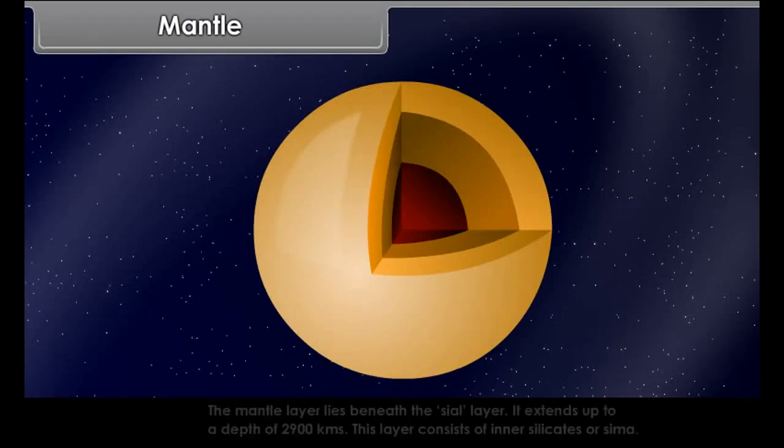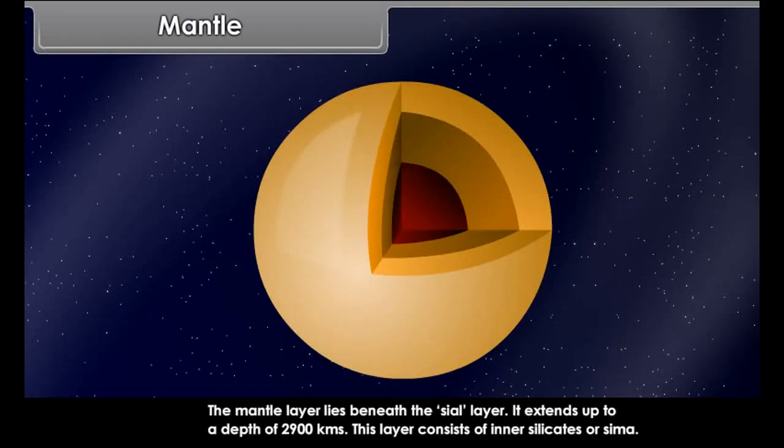The name Sial is derived by taking Si from silica and Al from aluminium. Its average density is 2.7 and it is a solid layer.